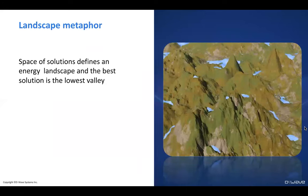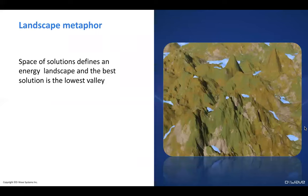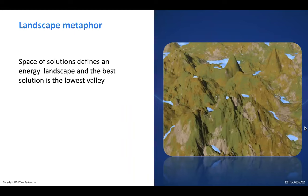I want to give you a sense of what problem the D-Wave system actually solves. The place most people start is the landscape metaphor: I define my problem as a landscape where I want to find the minimum — the lowest valley. You can think of each solution as a GPS coordinate across this landscape. If your solution is not optimal you're walking uphill; if it's getting better you're walking downhill. This metaphor really informs most of what we do with the D-Wave system.